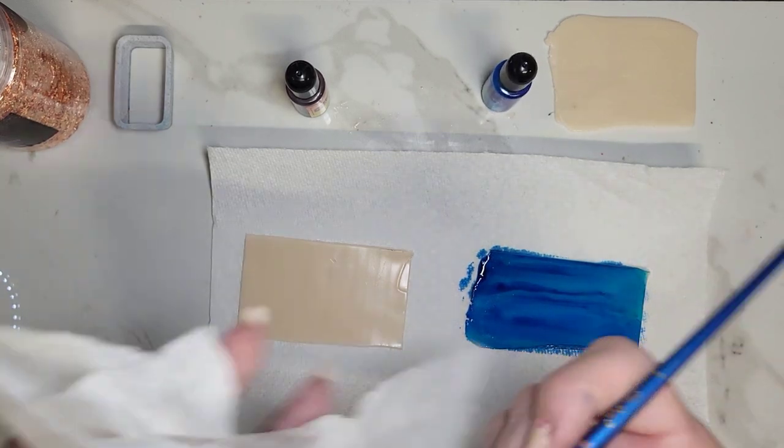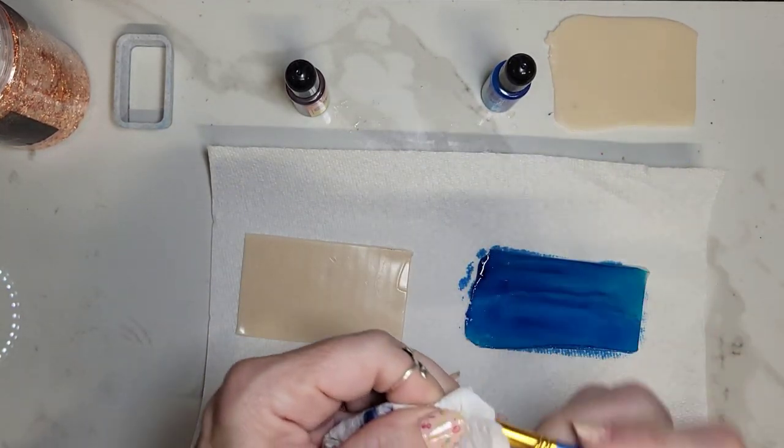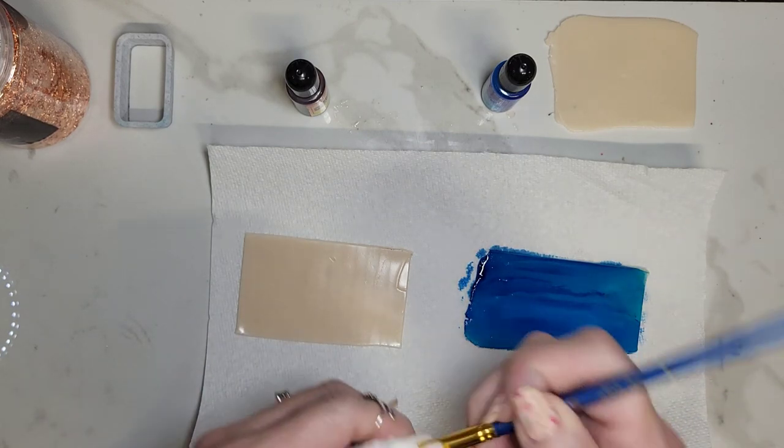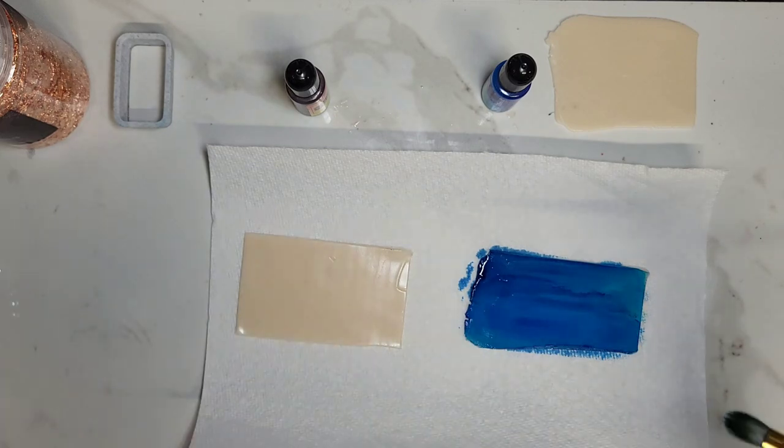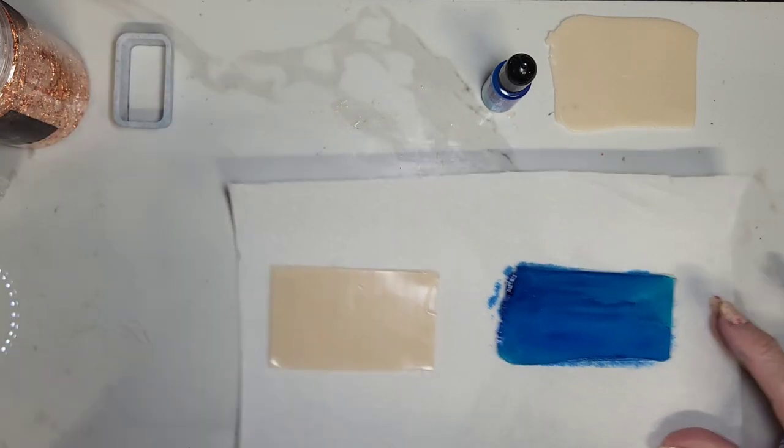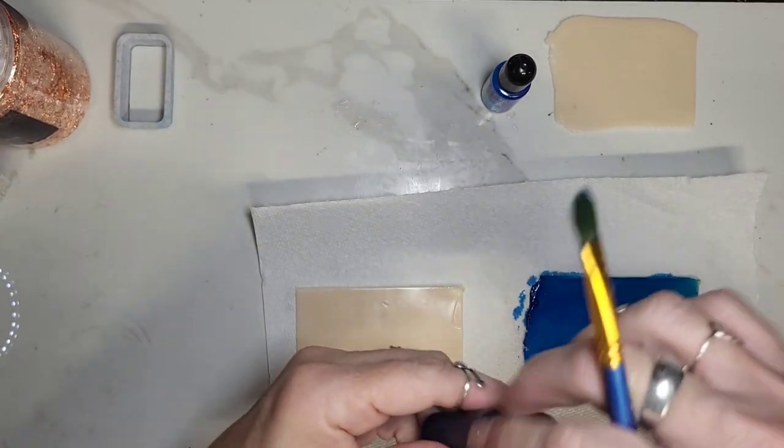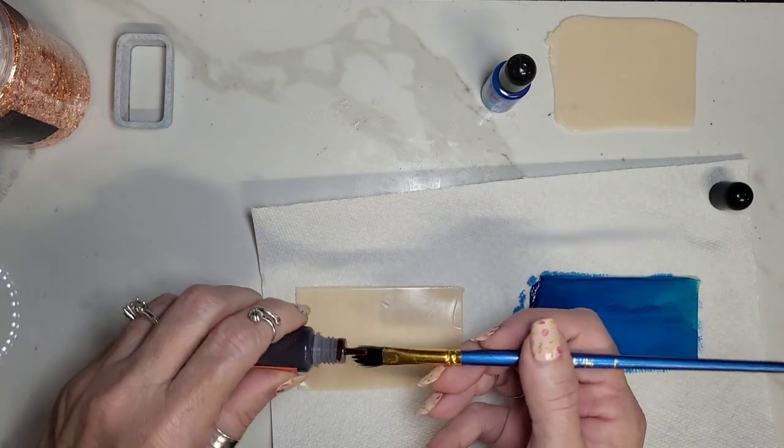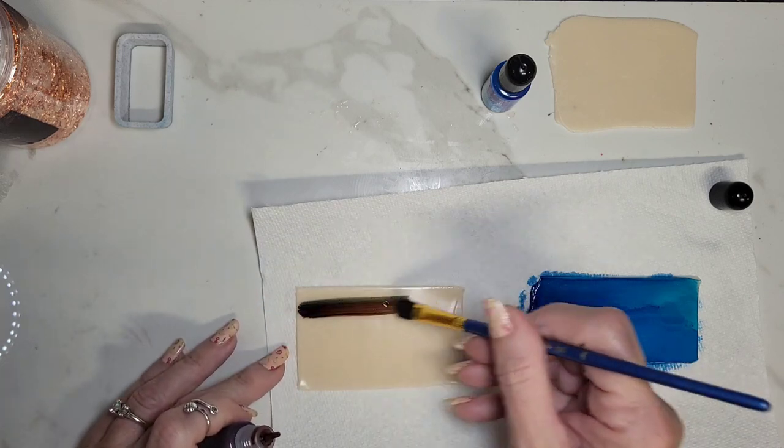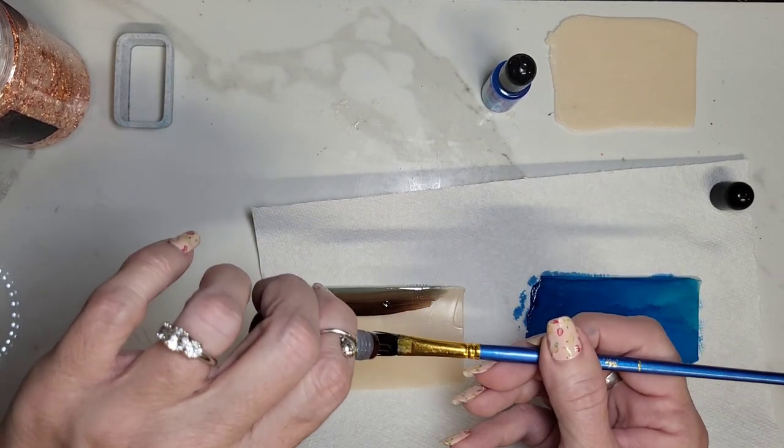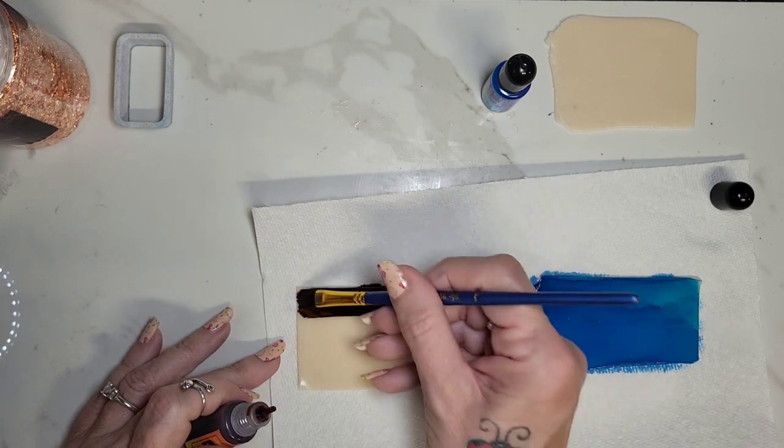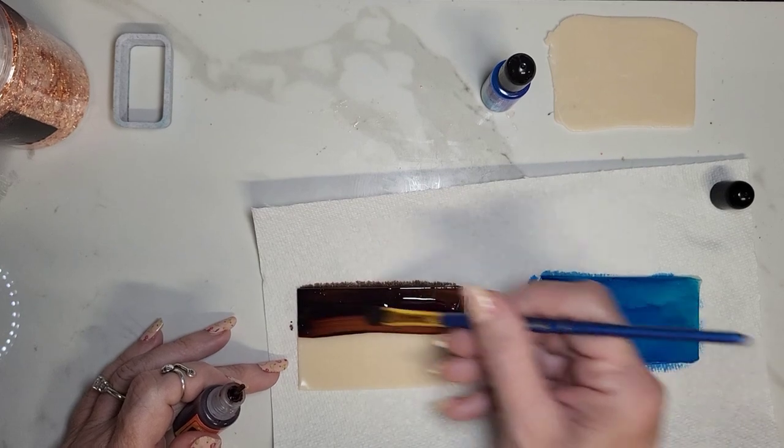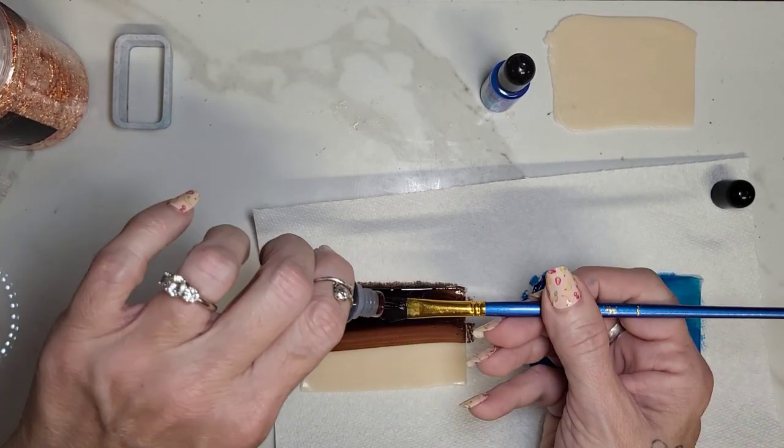I'm just going to do a little quick wipe in between colors, get the blue out. And then the brown. Still a little blue on there, but that's okay. So just swipe this on.